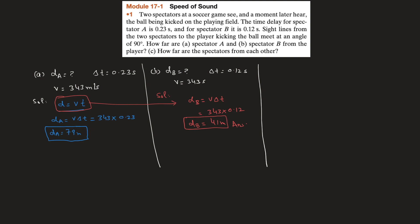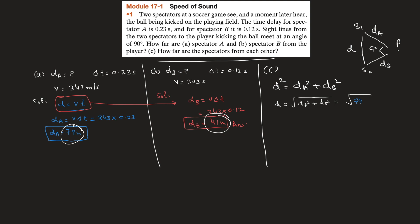Now part c: the distance between the two spectators, d_ab. Since the two sight lines form a right angle, we have a right triangle. Using the Pythagorean theorem: d_ab squared equals d_a squared plus d_b squared, so d_ab equals the square root of d_a squared plus d_b squared. Substituting the values of d_a and d_b and solving, we get approximately 89 meters. This is the distance between the two spectators.